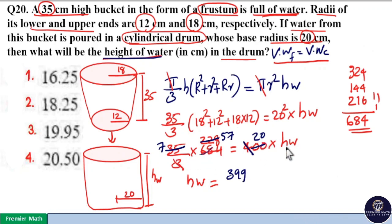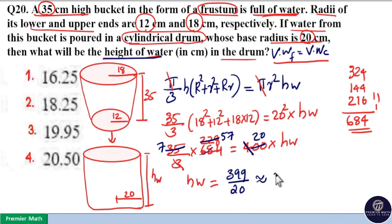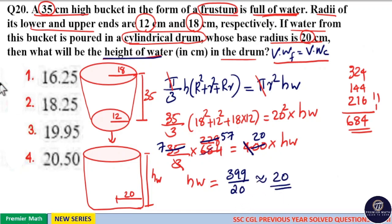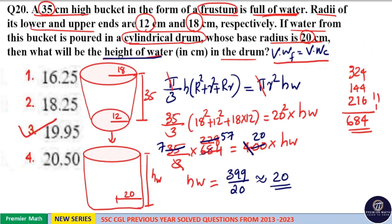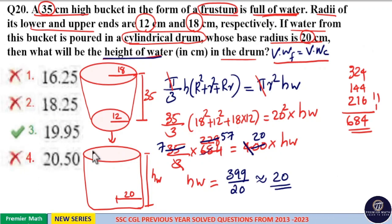Therefore, the height of water is equal to 399/20, which is approximately 400/20 = 20, so it is around 20 cm. Option 3 is your answer — that is, 19.95 cm is the height of water.